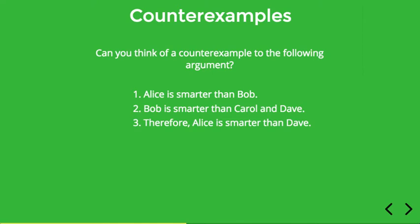Can you think of a counter example for this argument? Well, I don't think I can. No matter how much of my imagination I use, I can't seem to think of any possible way that premises one and two could be true but three false. This doesn't totally prove that such a scenario is impossible, but it gives me pretty strong reason to think that the argument is valid, since it doesn't seem possible to come up with a counter example.